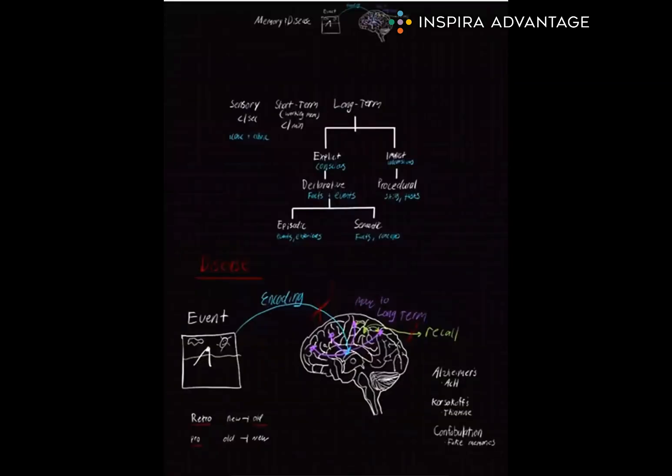We've discussed a lot today about the different types of memory, including sensory memory, short-term memory, working memory, and long-term memory. We also talked about the explicit implicit memory and retrieval. Furthermore, we discussed diseases that can affect memory, like Alzheimer's disease, Korsakoff syndrome, and confabulation. And finally, we discussed interference and how it can disrupt memory formation and recall. There's a lot of stuff in this video, so make sure that you get it into your Anki cards. And I want to thank you for watching our video on memory, and I will see you next time.